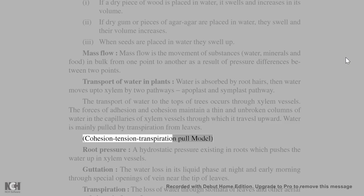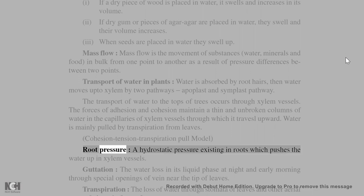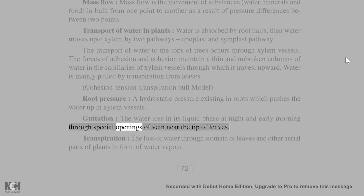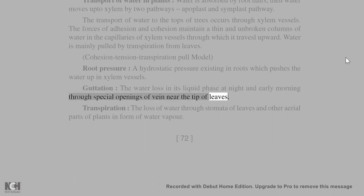Cohesion tension transpiration pull model. Root pressure: a hydrostatic pressure existing in roots which pushes the water up in xylem vessels. Guttation: the water loss in its liquid phase at night and early morning through special openings of vein near the tip of leaves. Transpiration: the loss of water through stomata of leaves and other aerial parts of plants in form of water vapor.